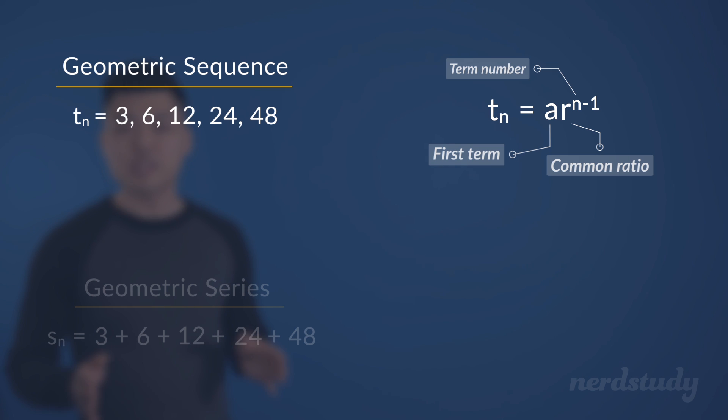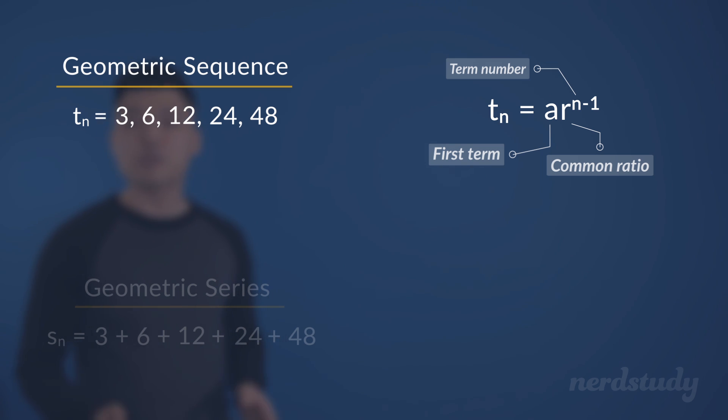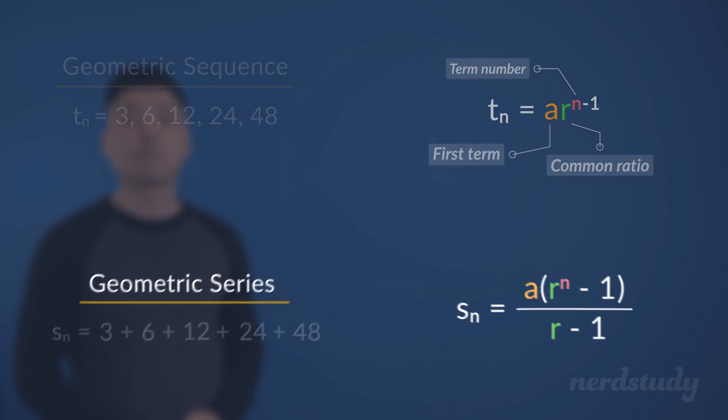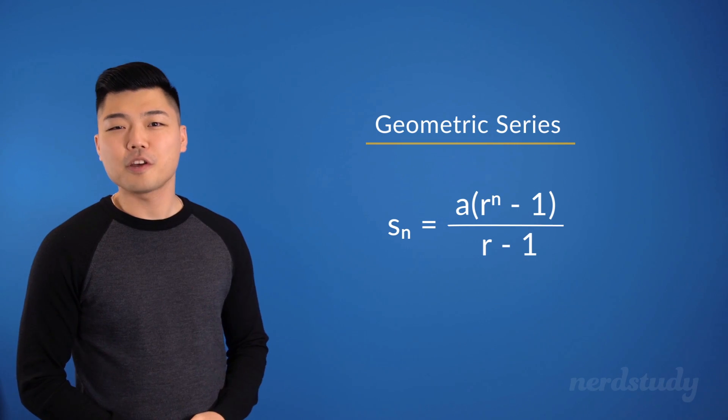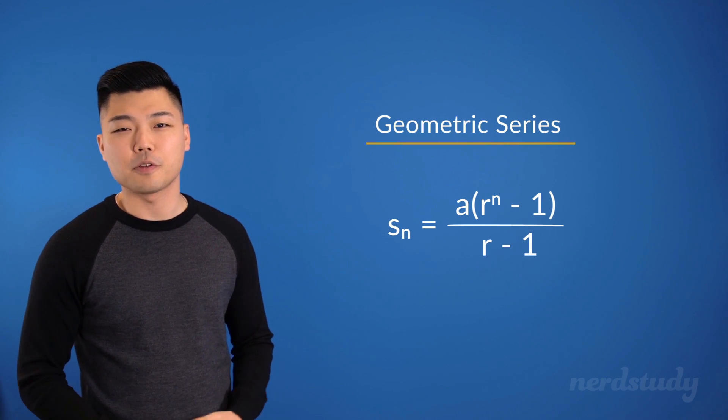So using the same variables, this is our formula for the geometric series. And just like our formula for the geometric sequences, these variables represent the exact same things. So let's move right along and try an example using the geometric series formula.